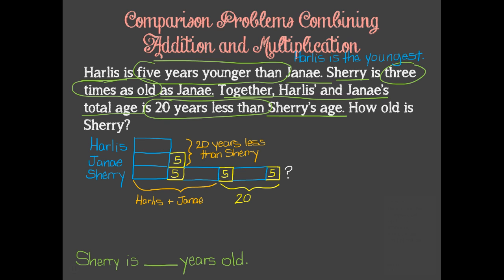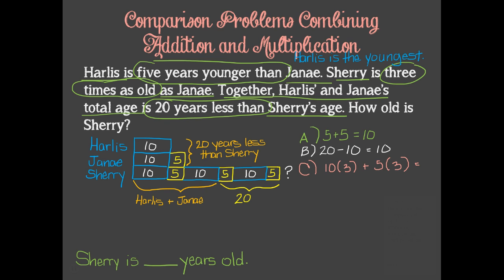Now we are ready to let our model drive the math. Looking at the remaining section, 5 plus 5 equals 10, so to figure out how many years the blue piece represents, we can subtract 10 from 20 to find that the blue piece equals 10. That means all these other blue pieces also equal 10. The final step to finding out Sherry's age is to add 10 three times, plus 5 three times. 10 times 3 equals 30, and 5 times 3 equals 15, and 30 plus 15 equals 45. Sherry is 45 years old.